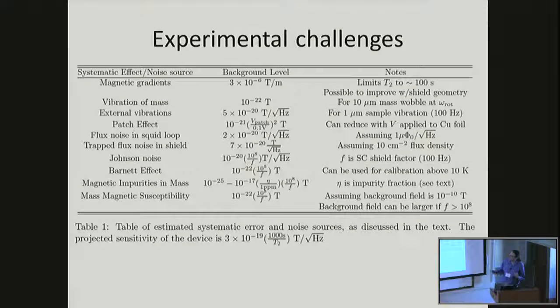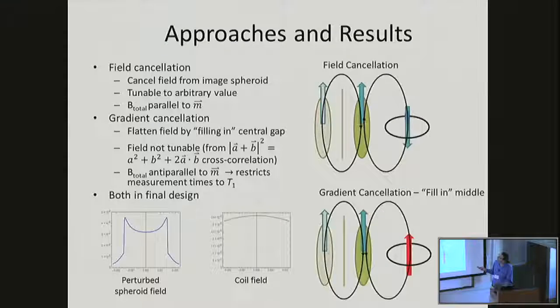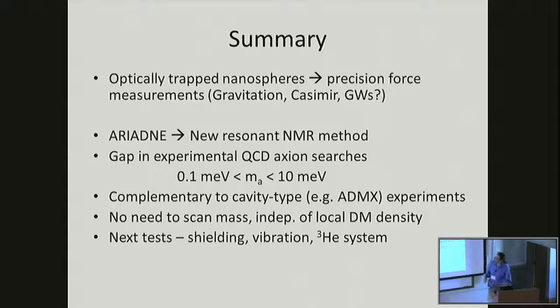There's a number of experimental challenges that I'm not going to have a whole lot of time to discuss since I'm already running a minute or two past. I just want to give you the flavor of some of the things we're worried about, one of which is magnetic gradients where we need to worry about inhomogeneous broadening. We want to have the entire sample excited on resonance. We have some techniques to try to mitigate some of the issues there. We worry about vibrations, things like the patch effect, flux noise, trapped flux in the shield, Johnson noise, the Barnett effect, which is basically the magnetization of an object upon its rotation. It's the opposite of the Einstein de Haas effect. We worry about magnetic impurities and so forth. I was going to say a little bit about our gradient, magnetic gradient mitigation technique, but I'm going to go ahead and skip over that just based on the time. So just to wrap up.